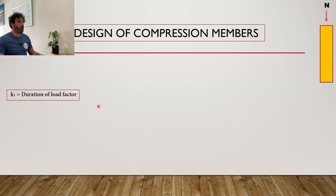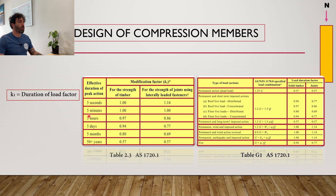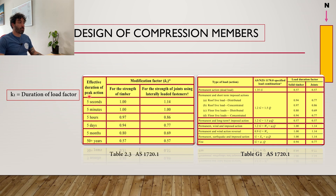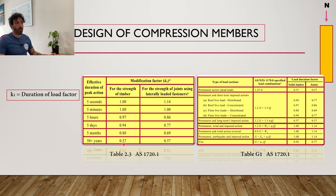Next is the duration of load factor k1, found on Table 2.3 or Table G1 in Appendix G. Timber can withstand impact much more easily from short-term loads than from long-term loads. For an effective duration of peak action of five seconds, k1 equals 1.0, while for 50 years or more, k1 is 0.57 — a reduction of almost 50% in capacity.